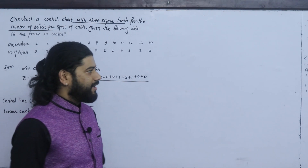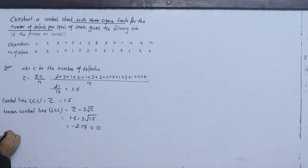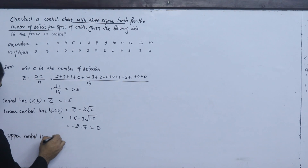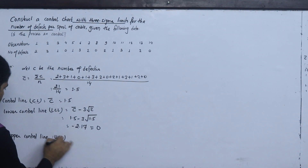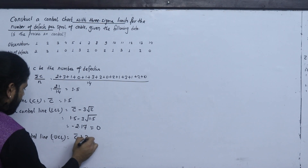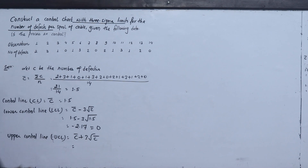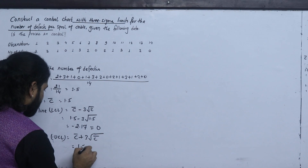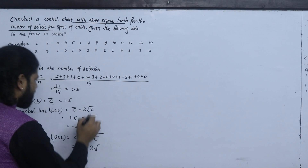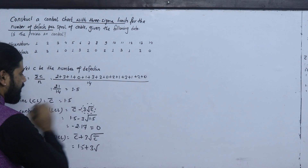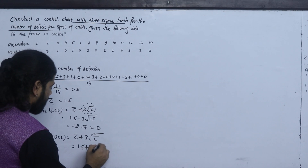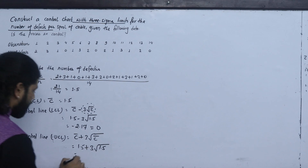Now the upper control line UCL equals c-bar plus 3 times the square root of c-bar, which is 1.5 plus 3 times the square root of 1.5. This gives UCL equal to 5.17.